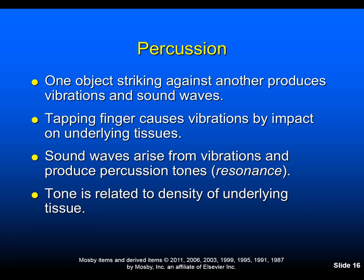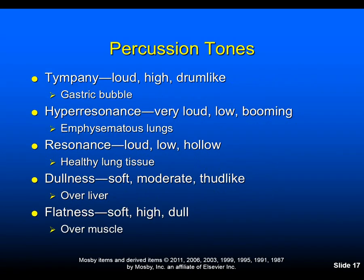In percussion — striking one object against another to produce a vibration — sound waves can be heard as resonance arising from that vibration. The density of the medium through which the sound waves travel determines the degree of percussion tone: the more dense the medium, the quieter the tone. Percussion tone over air is loud, over fluid is less loud, and over solid is very soft. The tones are classified as: tympany — loud, high, and drum-like, as over a gastric bubble; hyper-resonance — very loud, low, and booming, as in emphysematous lungs; resonance — loud, low, and hollow, as in healthy lung tissue.